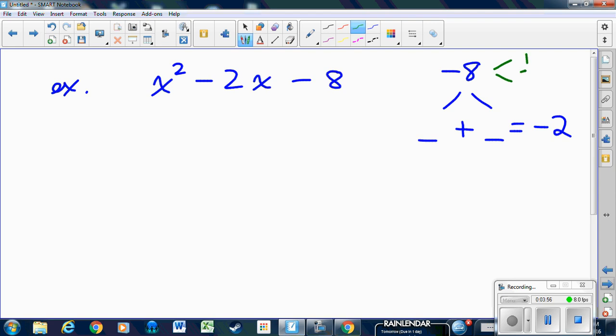Factors of 8 would be 1 and 8, or 2 and 4. We need two numbers that also add to -2. There's no way with 1 and 8 to get -2, but there is with 4 and 2, which are also factors of -8. But we need one of them to be negative so they multiply to the correct value. In order to add to -2, that number has to be -4. So I now have my two numbers that go into my brackets: x-4 and x+2. And I'm done.